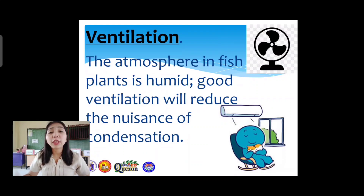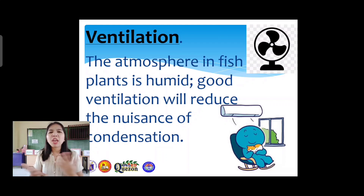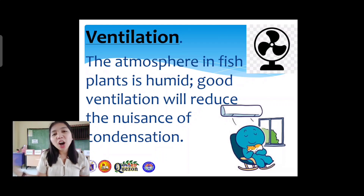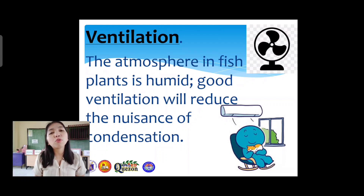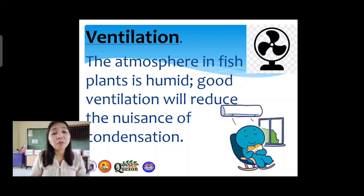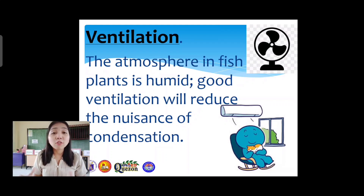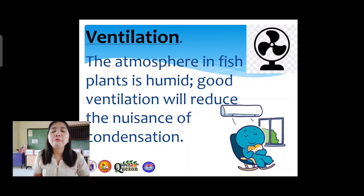Next to lighting is ventilation. When we say ventilation, it pertains to the atmosphere in fish plants, which is commonly humid. Good ventilation will reduce condensation and also avoid easy spoilage of the fish being processed. There must be proper ventilation because too much heat or too much coldness may destroy the processed fish.